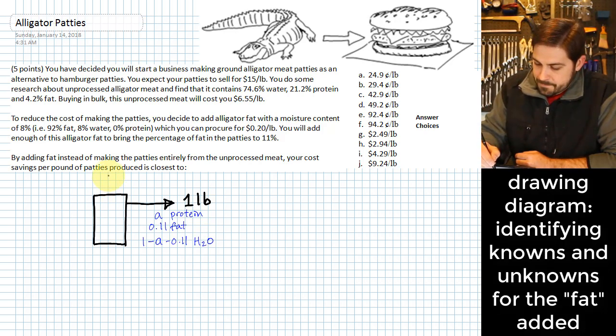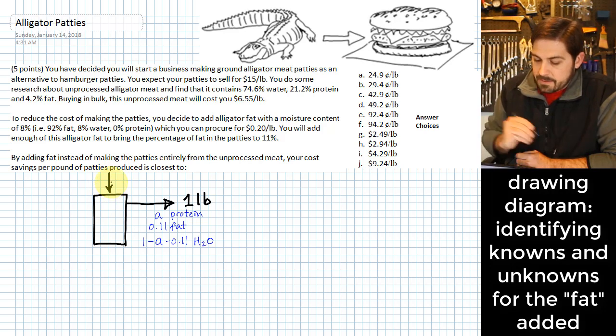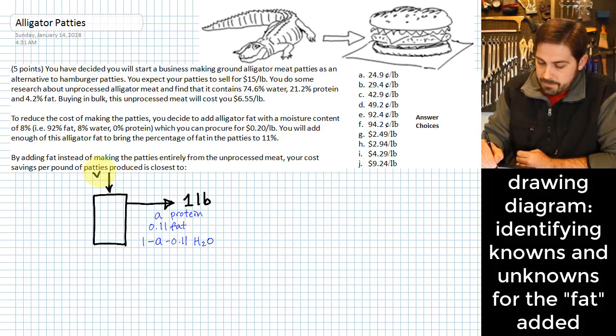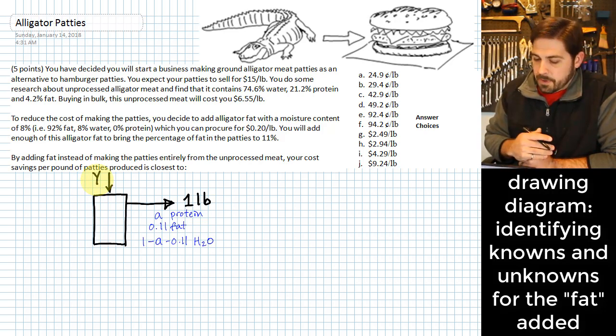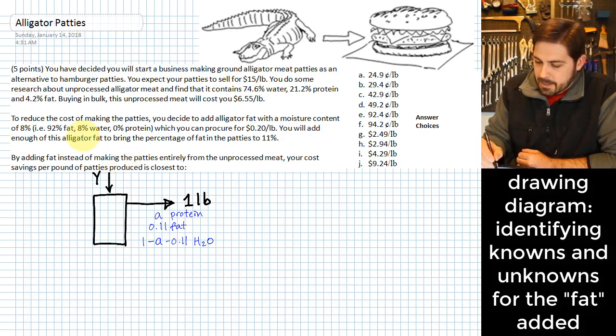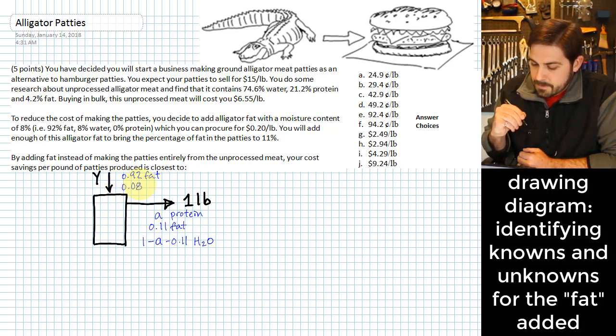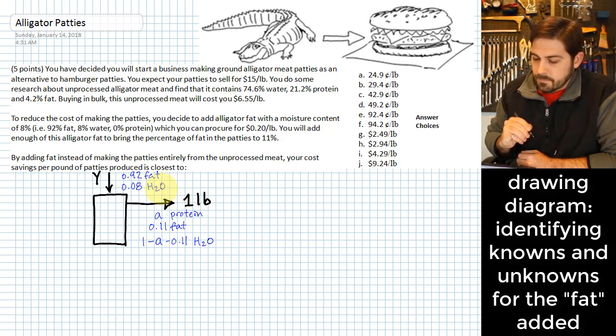What else do we have here? Well, we're going to be adding this fat stream. This is the added fat, and I'm going to give that the variable of Y. What do we know about that? Well, it is 0% protein, so that's nice. One of those elements goes away. But we will have 92% fat, and we will have the remaining portion is going to be water.